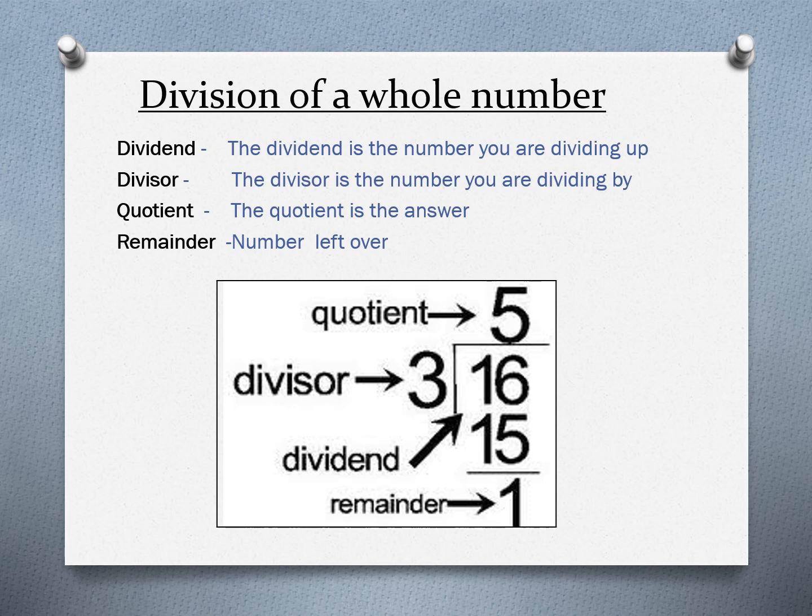The dividend 16 does not divide equally by 3, so we take the nearest smaller value — 15. Multiply 3 by 5 to get 15. Now subtract 15 from 16 and we get 1, which is the remainder.